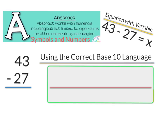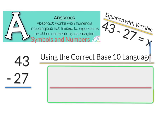Finally, we get to our abstract. Abstract works with numerals, including but not limited to algorithms or other numeral-only strategies. Basically, we're using symbols and numbers to solve this problem, and essentially this is where we want to be at the end — after using concrete and representational, we want to be able to show all of this abstractly. Let's look at our equations with variables: 43 minus 27 equals x, where x is our unknown value we're solving for.